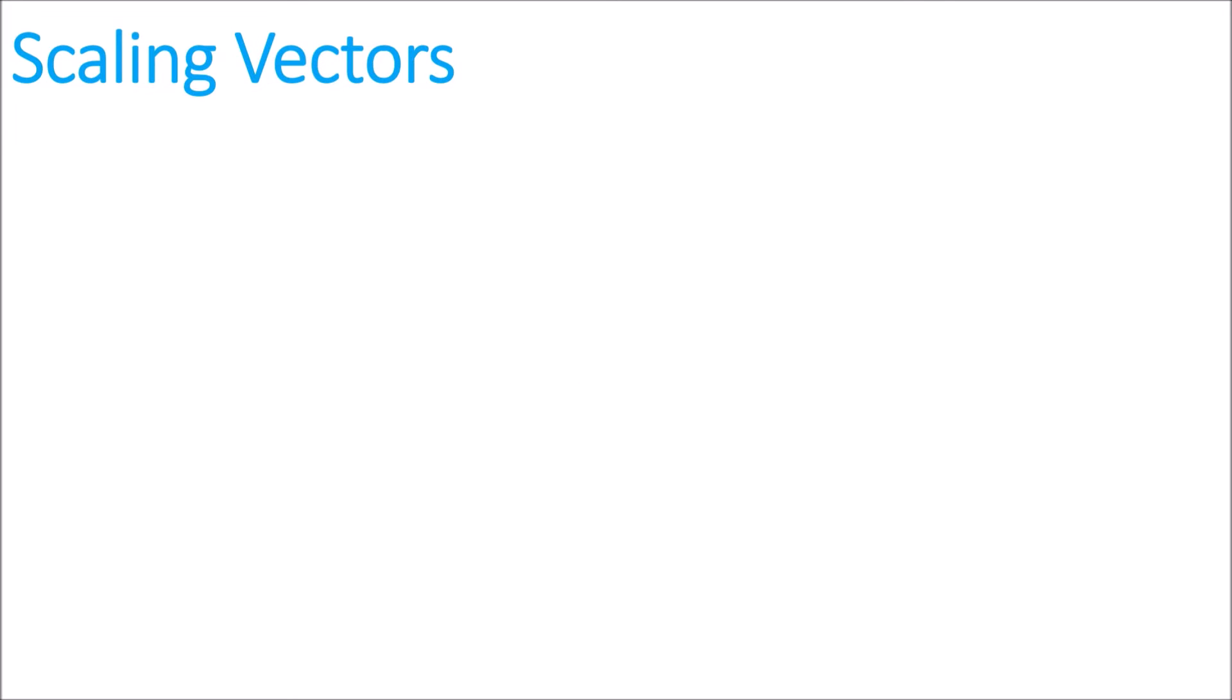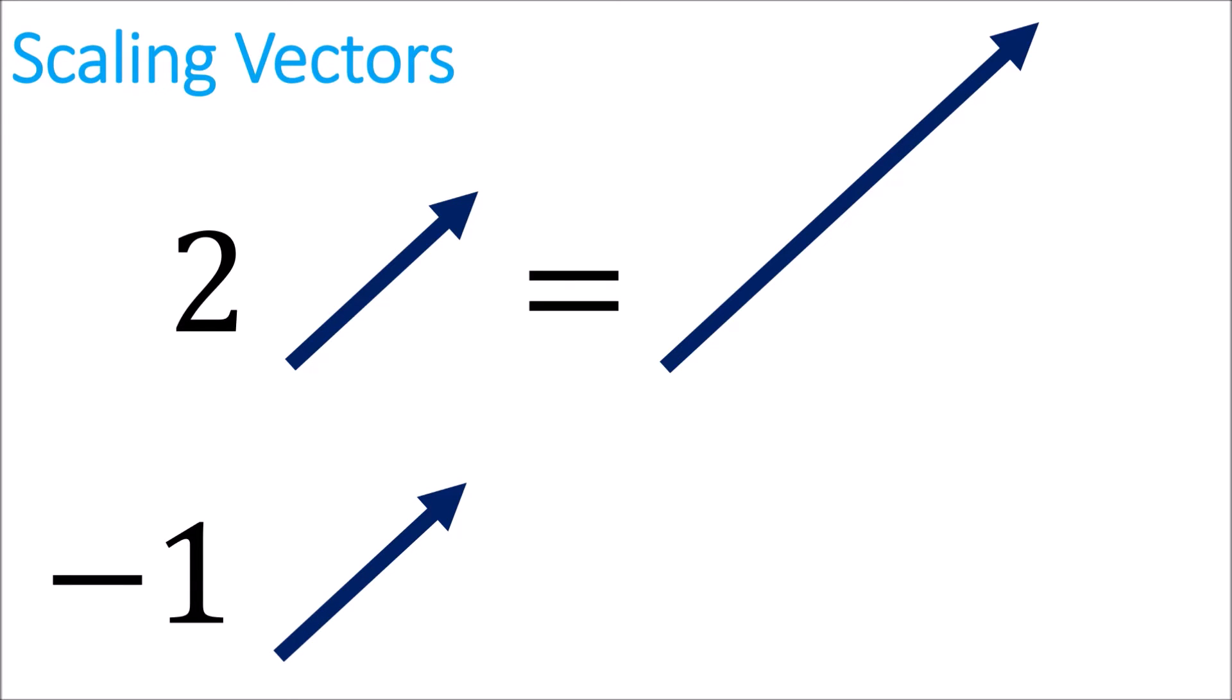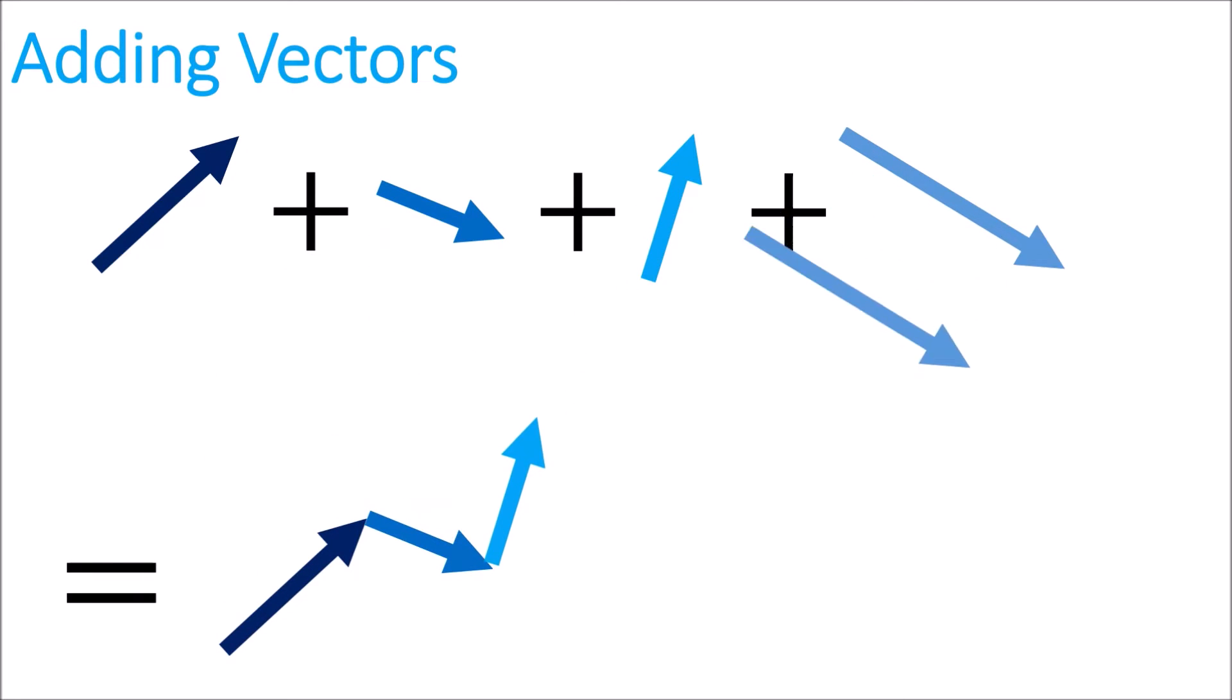I'm hoping you already know that we can scale vectors. For example, if I multiply a vector by 2, that vector becomes twice as long, pointing in the same direction. And if I multiply a vector by negative 1, it keeps the same length but reverses its direction. I'm also hoping you know how to add vectors. If we add a bunch of vectors together, we can get the result by placing them one after another, tip to tail, and drawing the resulting vector starting at the tail of the first vector and ending at the tip of the last vector.